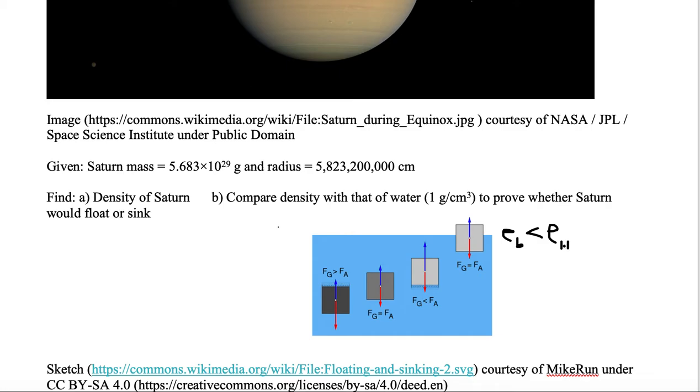Our goal here is to find the density of Saturn and to compare that with water. If the density of Saturn is less than that of water, then Saturn would float if it could be put on water. If it is greater than that of water, then the planet would sink.